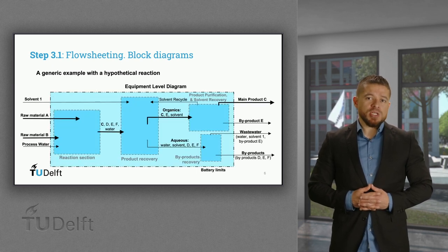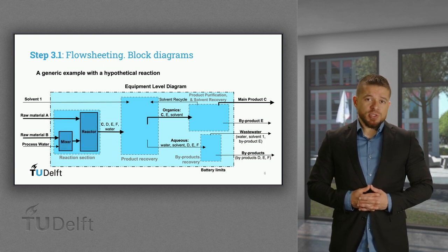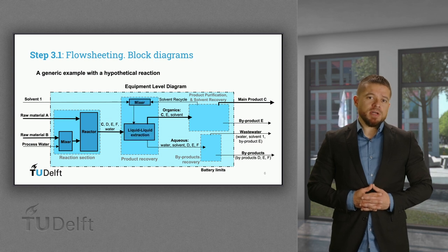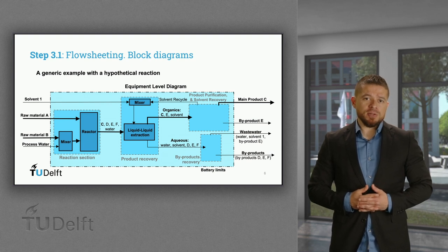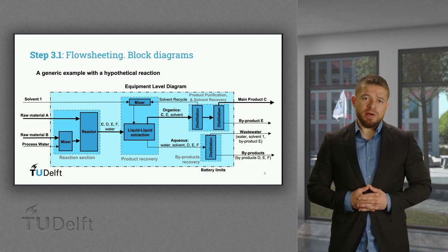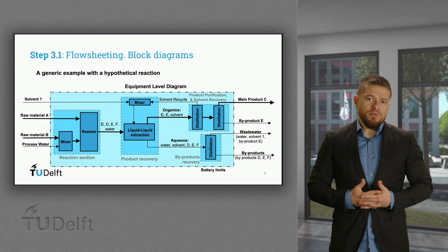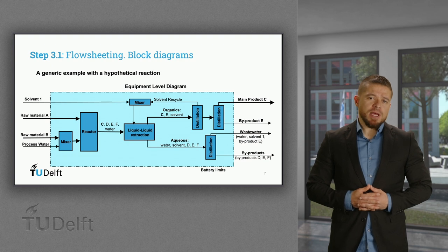For the equipment level, we know the inputs and outputs of the processing sections. For the reaction section, only a mixer is needed prior to the reactor. For the recovery section, in addition to the liquid-liquid extraction, another mixer is needed to combine the recycled solvent with fresh solvent. Finally, the product purification and solvent recovery section — all components are separated by boiling points and therefore distillation is applied.